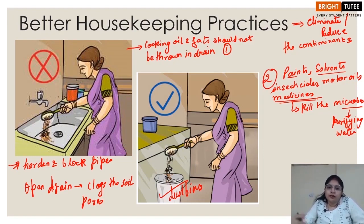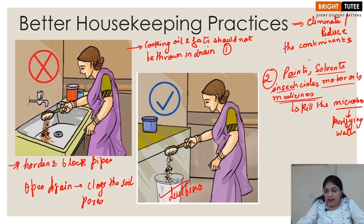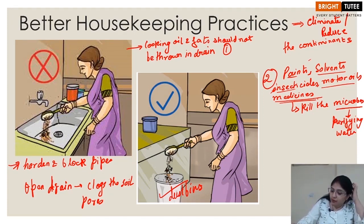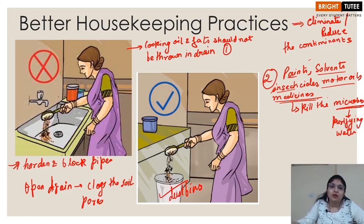These simpler forms can be absorbed into the soil and utilized by plants. But if chemicals like paints, solvents, insecticides, and motor oils are added to the wastewater, the microbes present will get killed. Without these microbes, which assist in the purification of water, the accumulation of waste will keep increasing in the wastewater and will give rise to more disease-causing microbes and pathogens.